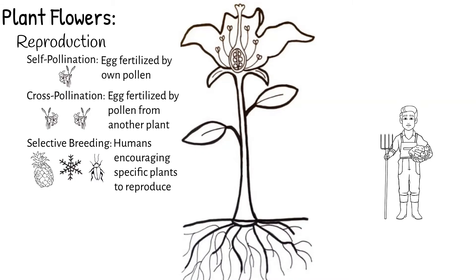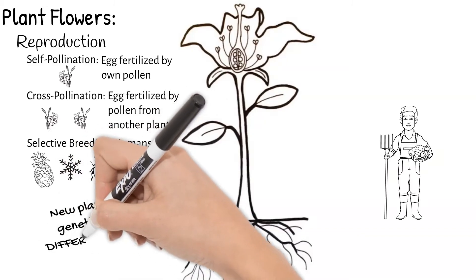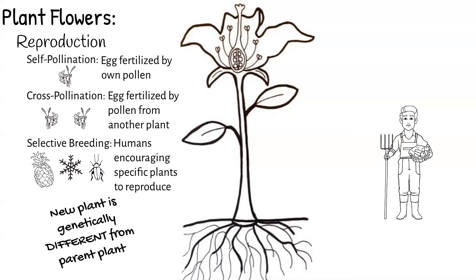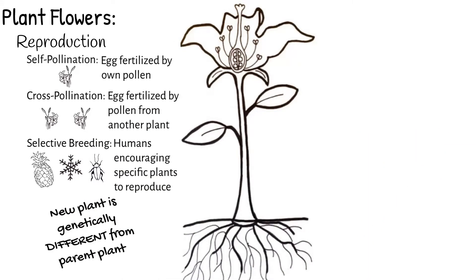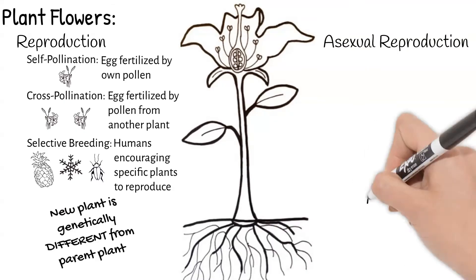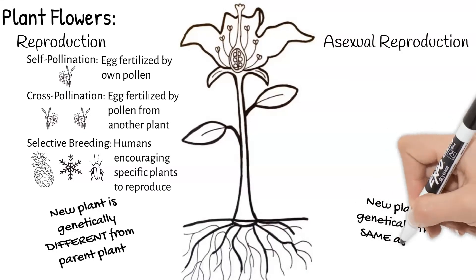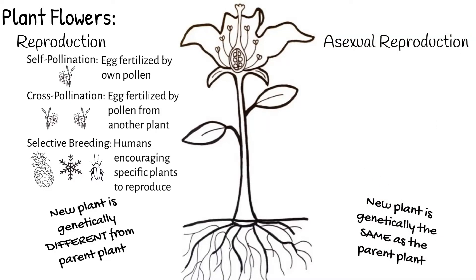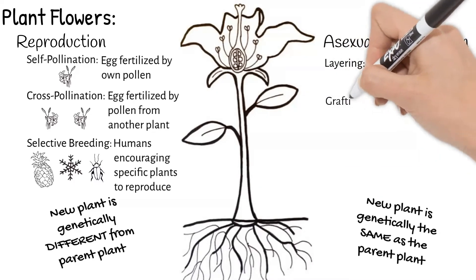With all of these types of reproduction, the new plant created is slightly different from the parent plants. When it comes to plants, there are also ways they can asexually reproduce. This is when one plant grows a new plant from its roots, stem, or leaves. The new plant will be exactly the same genetically as the one it came from. Three types of asexual reproduction include layering, grafting, and cuttings.